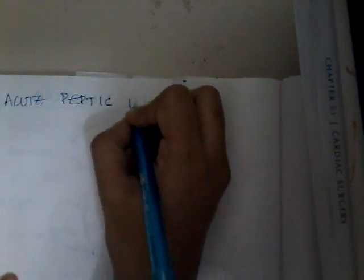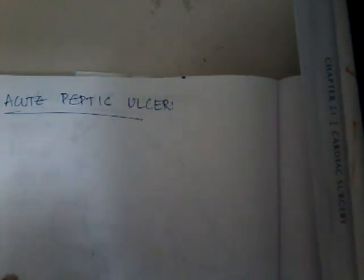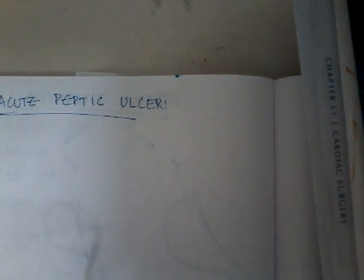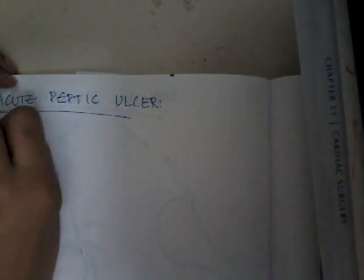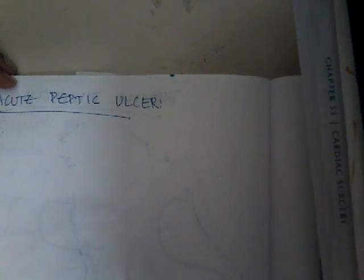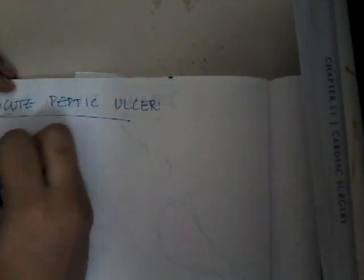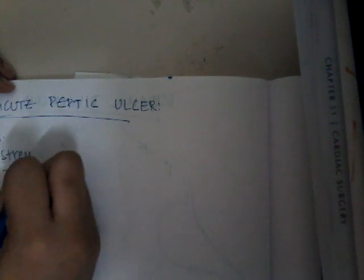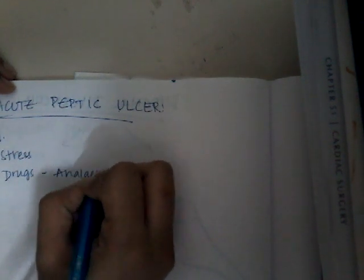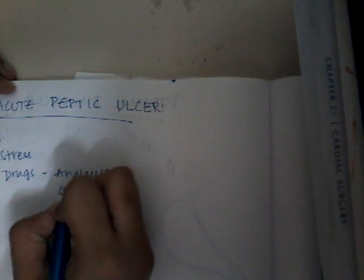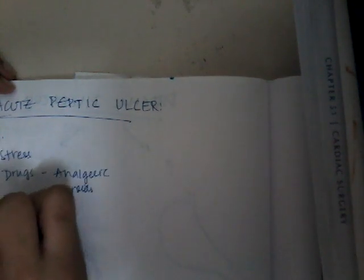Let us learn about acute peptic ulcer. Acute peptic ulcers can either be duodenal ulcer or gastric ulcers. What are the major causes of acute peptic ulcer? The major causes include stress, then drugs like analgesics and steroids, and also surgeries.